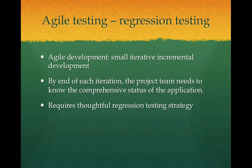If the comprehensive regression testing result shows no issue, then the project team can move on to the next iteration with confidence. And if there is an issue with the regression testing result, then the project team can decide what to do with that issue — it can be prioritized and addressed quickly.